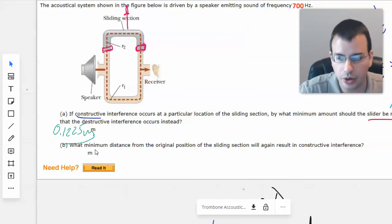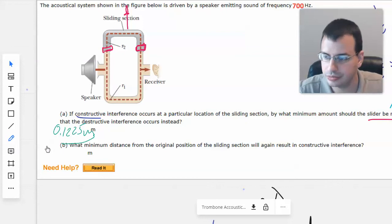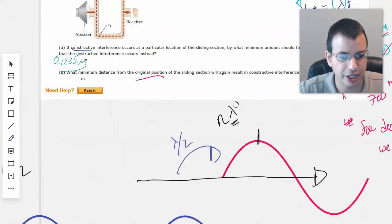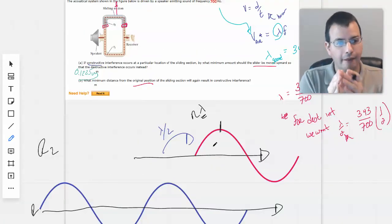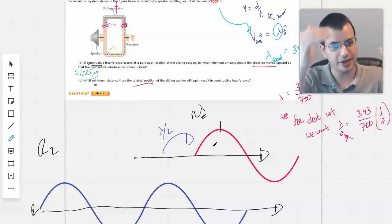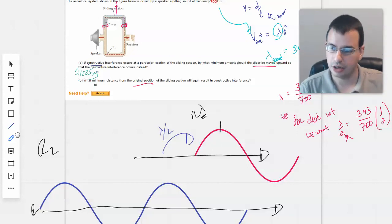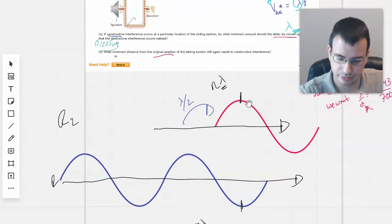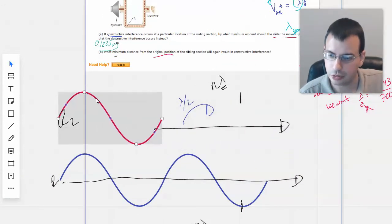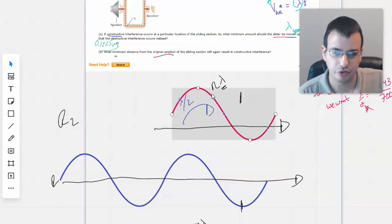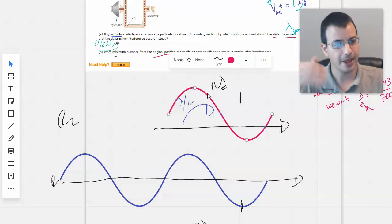So then, the next question would be, what minimum distance from the original position of the sliding will again result in constructive interference? So, if we start with one wavelength, go push it one half over, that gives it destructive. Go one more half wavelength over, and that will give us back to our original position, which will be constructive interference. So, if you look at it from here, start here, which is our constructive, because they line up. Moves halfway over, destructive, and then move all the way over to another half wavelength, and then you get back to constructive.